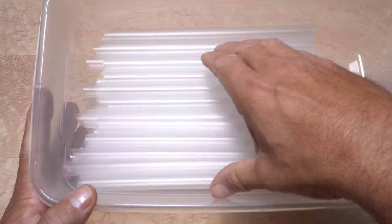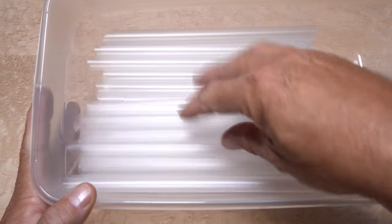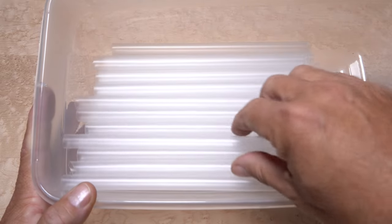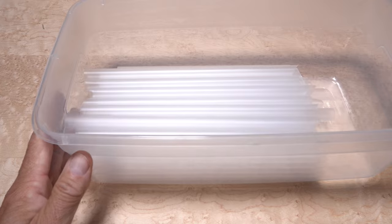Boba, or bubble tea straws, are great for storing a number of tying materials. These clear, reusable ones cost around $10 for 100 online.